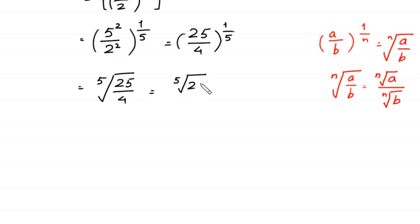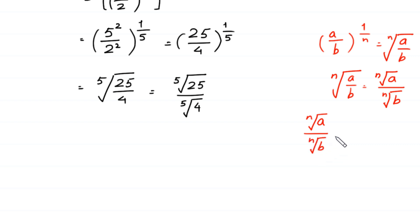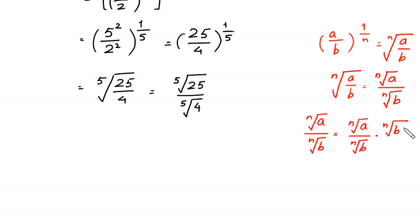This expression equals the 5th root of 25 over the 5th root of 4. According to this property, the nth root of a over the nth root of b equals the nth root of a over the nth root of b, times the nth root of b to the power n minus 1, divided by the nth root of b to the power n minus 1.